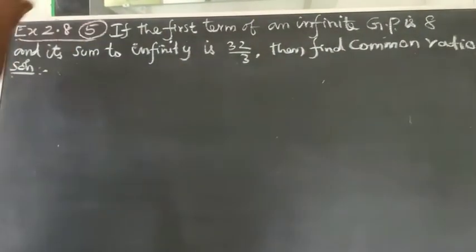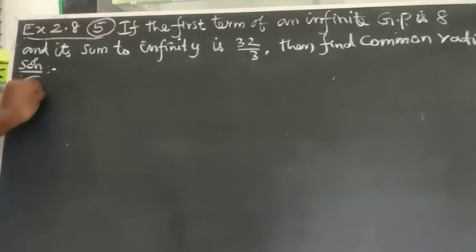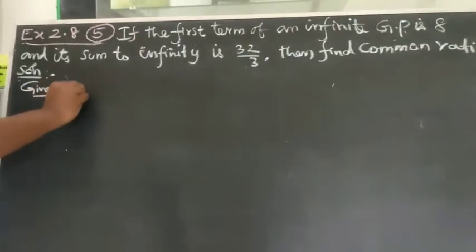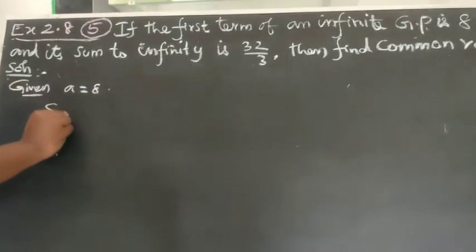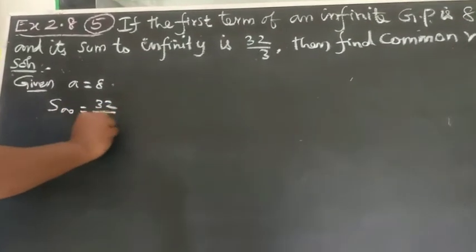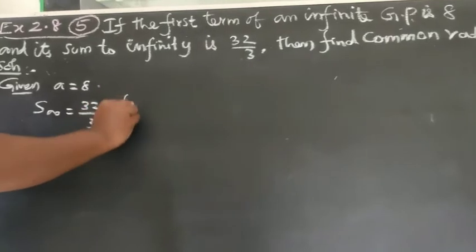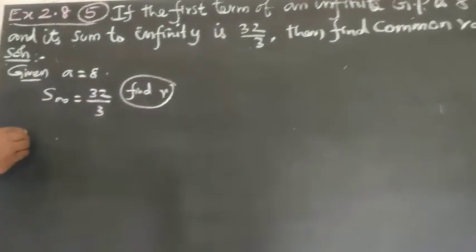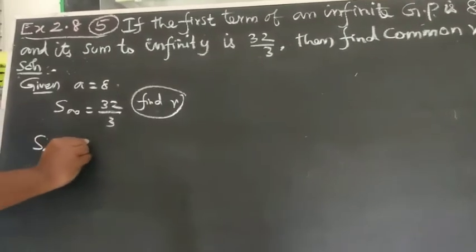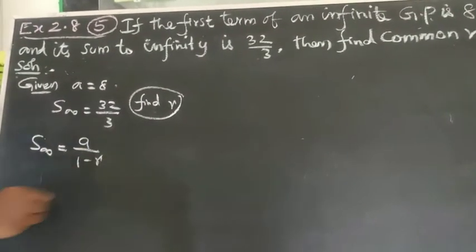The first term of an infinite GP is 8, given a = 8, and sum to infinity S∞ = 32/3. Find r. The formula for S infinity is S∞ = a/(1-r).